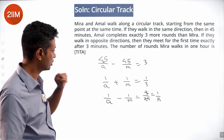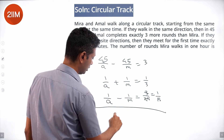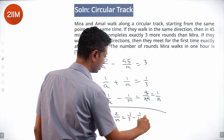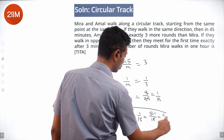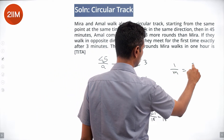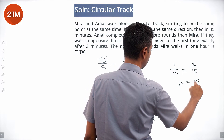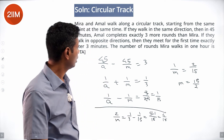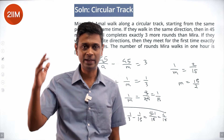Subtracting the equations: 2/m equals 1/3 minus 1/15, which is 5/15 minus 1/15, giving 4/15. So 1/m equals 2/15, meaning Meera takes 15/2 minutes — that's 7.5 minutes — for a lap. In 15 minutes she does 2 laps, so in one hour she does 8 laps.